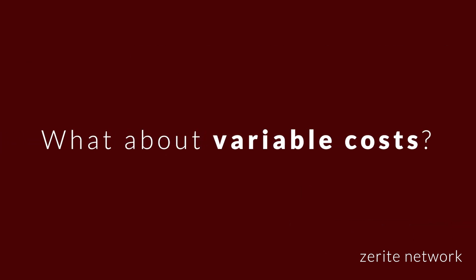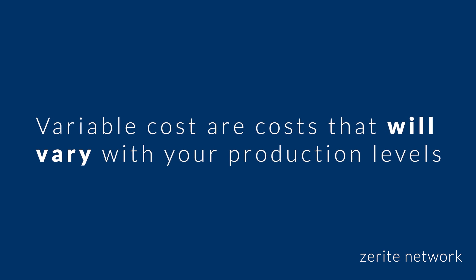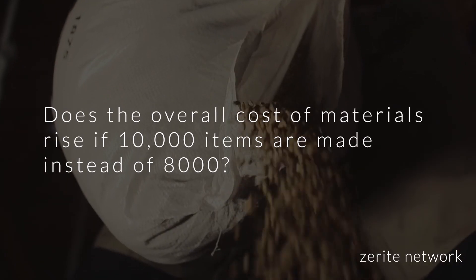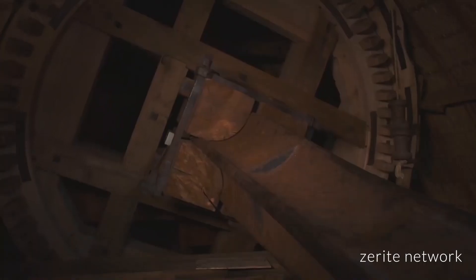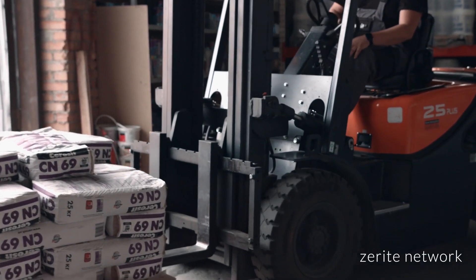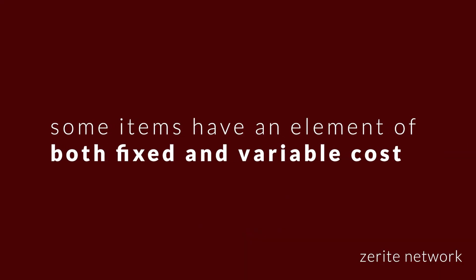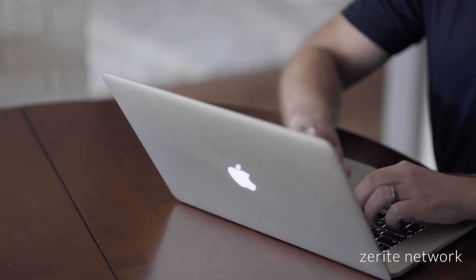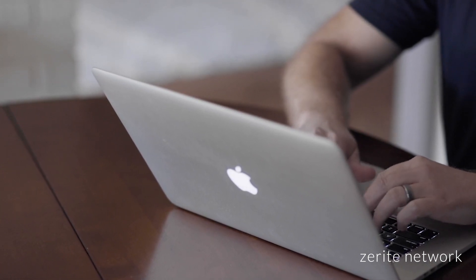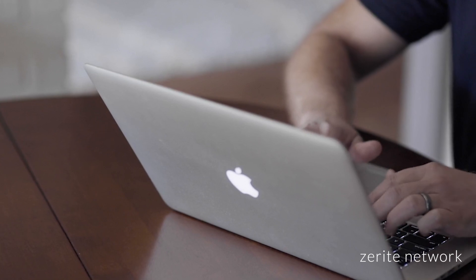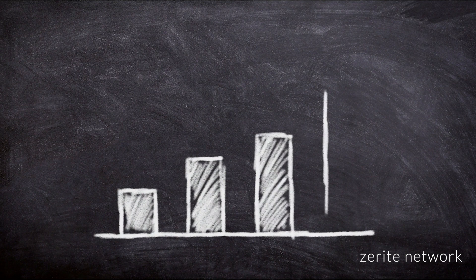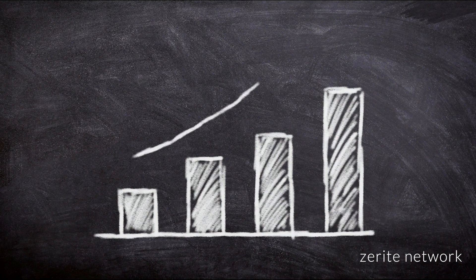What about the variable cost? Variable costs are costs that will vary with your production level. For example, does the overall cost of material rise if 10,000 units are made instead of 8,000? Raw material is an example of variable cost. Now, there are some items which have an element of both fixed and variable cost. An example is online storage spaces — some companies charge you a fixed cost as long as you store items up to a certain GB, and then anything past that varies with the gigabytes of space you're using.